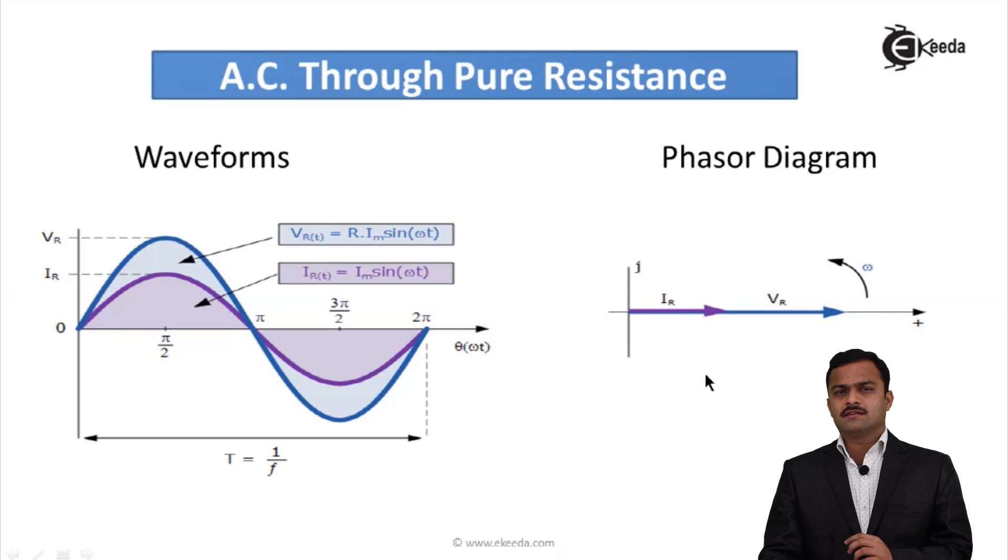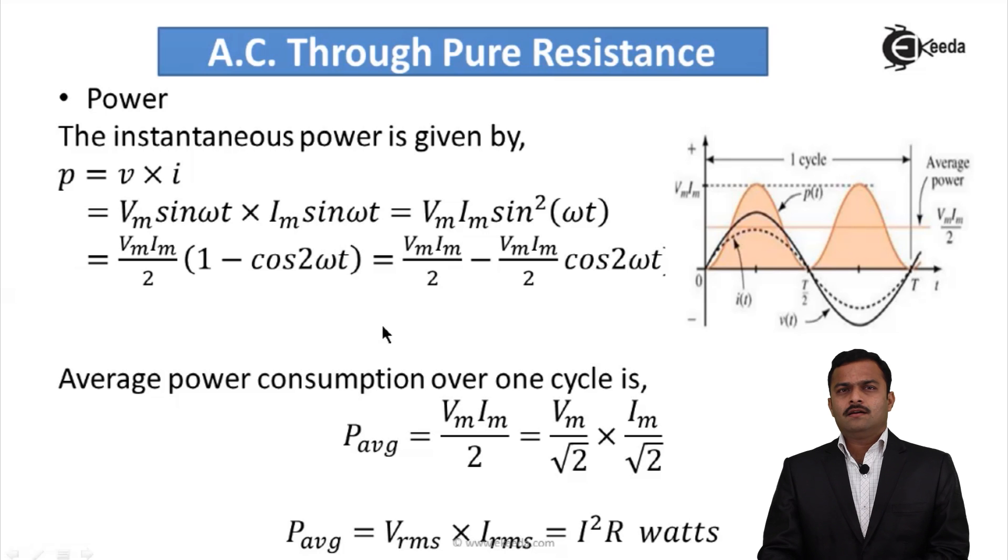Now let's see the power relation. The instantaneous power is given by P = V × I. So V equals Vm sin(ωt), and I also equals Im sin(ωt). If I solve, I will get Vm × Im sin²(ωt). This is the instantaneous power I am getting.